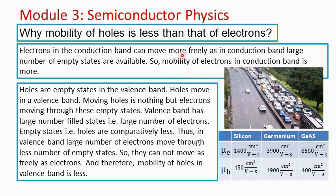Mobility is the average drift velocity acquired by the carriers per unit electric field. That means mobility indicates the ease with which the carriers are moving. So in the conduction band, electrons can move with ease more freely, because a large number of empty states are available for them.